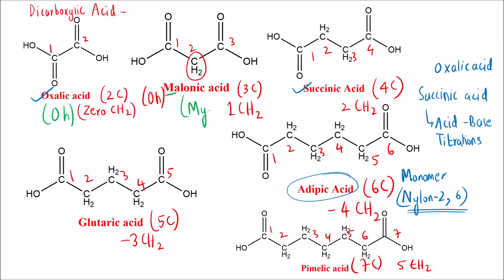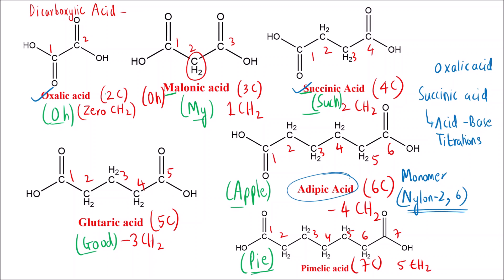So the mnemonic works as follows: O for oxalic acid, M for malonic acid, S for succinic acid, G for glutaric acid, A for adipic acid, and P for pimelic acid — giving us 'Oh My Such Good Apple Pie.' This helps you remember the structures and names of these dicarboxylic acids. I hope you found this video helpful, thank you.